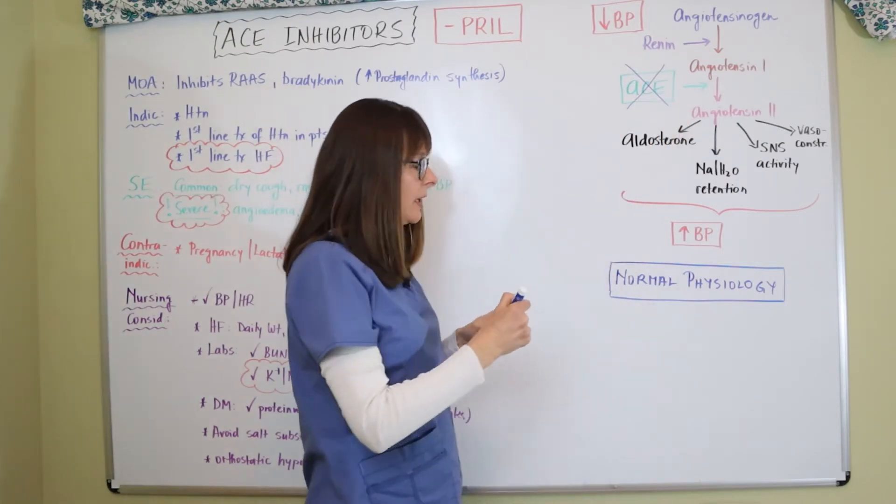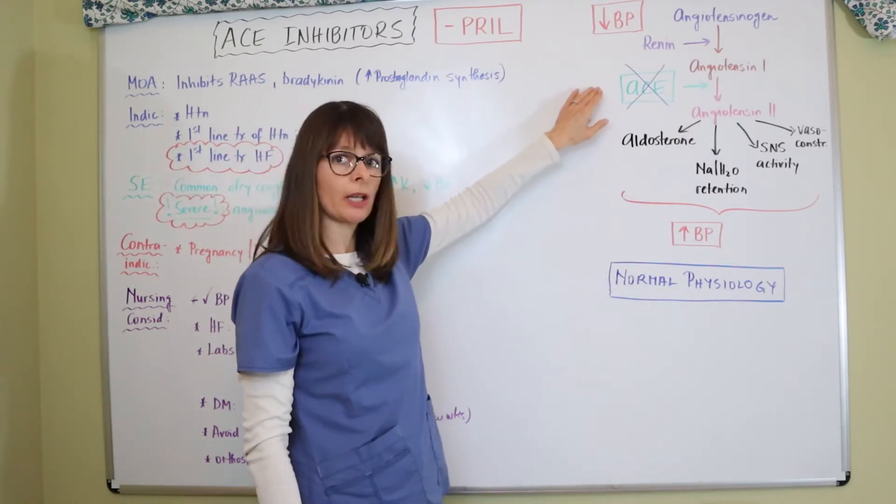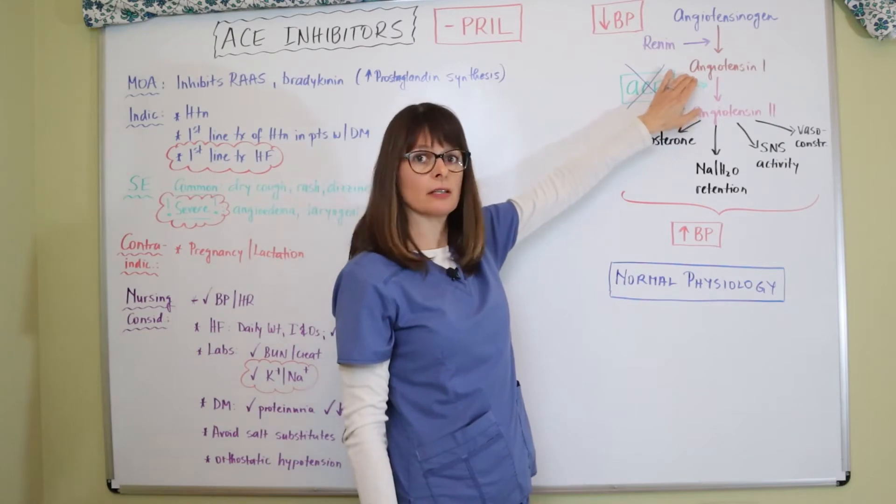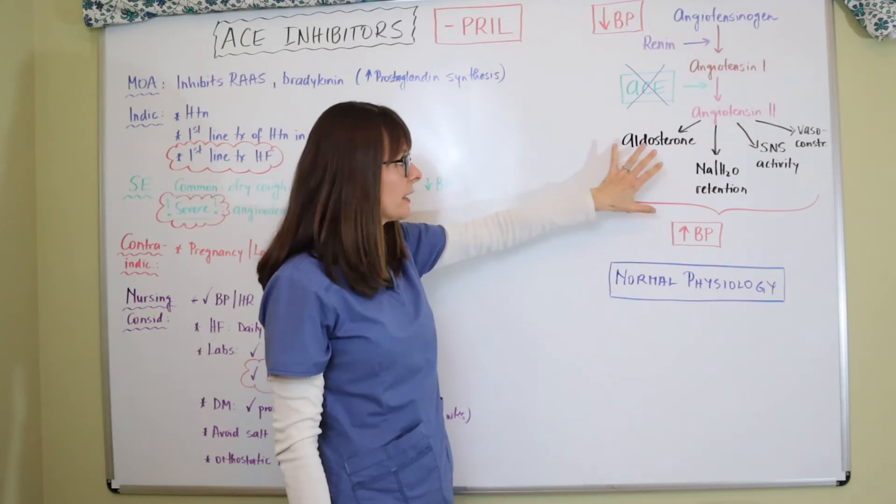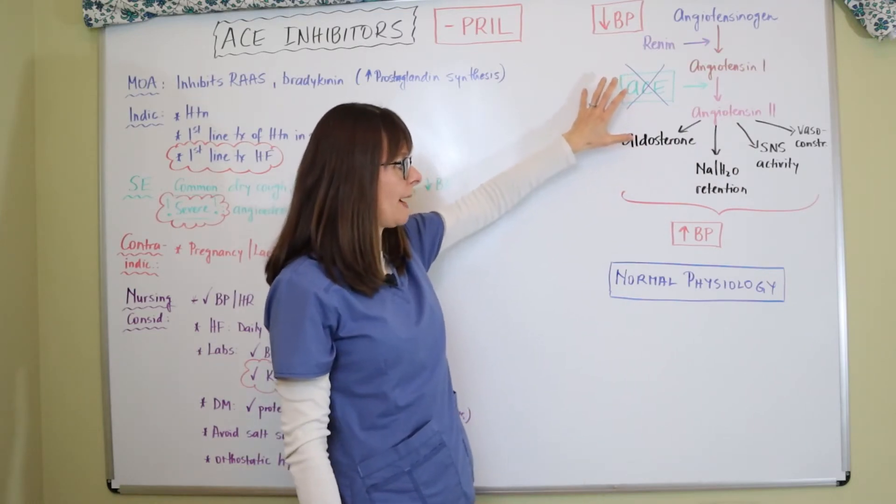So when we inhibit ACE from working to convert angiotensin 1 into angiotensin 2, we prevent this whole cascade of events from happening.